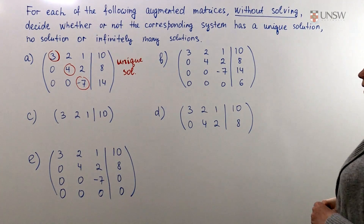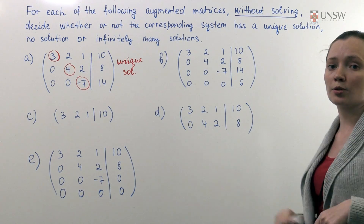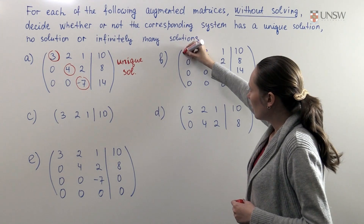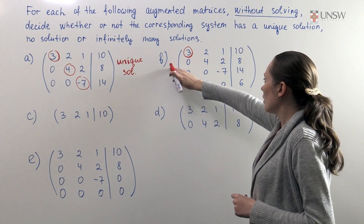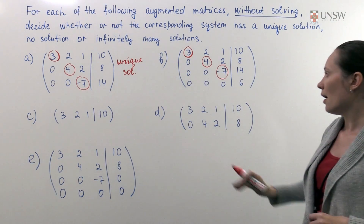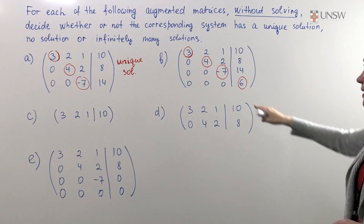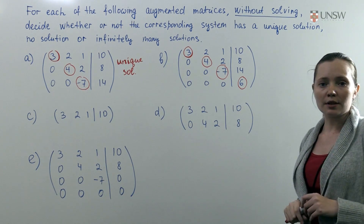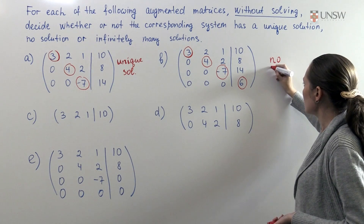Now let's do the matrix in part B. Again the first step is to determine all leading terms. We go along each row and the first non-zero entry in each row is the leading term. In the second row this one is leading, in the third row this one is leading, and in the fourth row this one is leading. So in this case we have four leading columns. We look at the constant vector, and here it is a leading column. Therefore we conclude that the system has no solution.